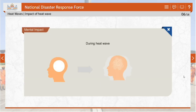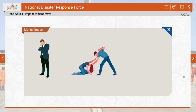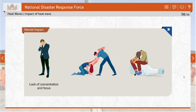During a heat wave, there is a significant increase in stress, anxiety and depression that may trigger or exacerbate mental, behavioral and cognitive disorders. Mental impacts of heat wave include lack of concentration and focus, rise in domestic abuse and violence, and increased alcohol and drug abuse.